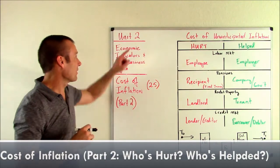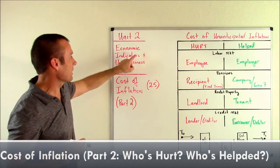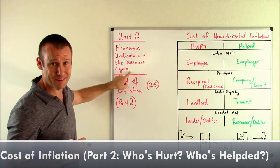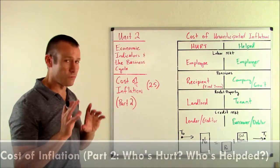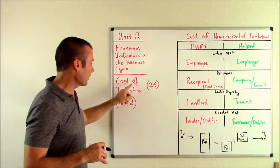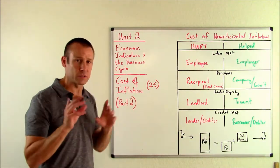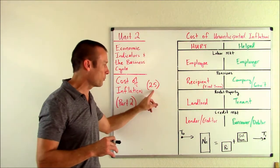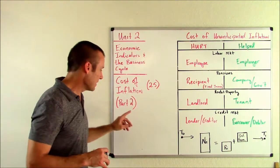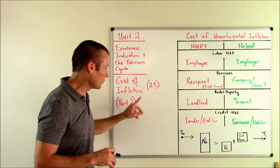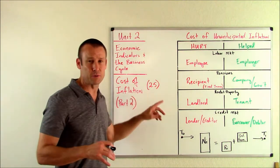Hey, everybody. Welcome back. We are on Unit 2, Economic Indicators in the Business Cycle. We're focused on cost of inflation, which is subunit 2.5, and this is part two in this subunit.